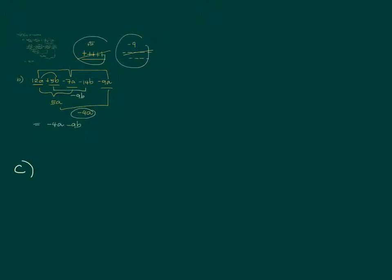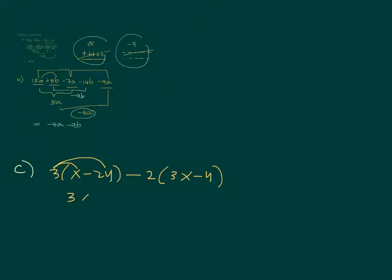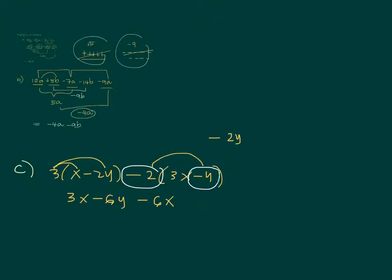Next example: 3 times (x minus 2y) minus 2 times (3x minus y). I can see in your work you distributed the 3, so we have 3x minus 6y. Then you wrote negative 2y for the second part, but this is negative 2 times negative y — negative times negative is positive — so it's not negative 2y but rather positive 2y. Be careful with minus signs.